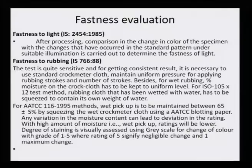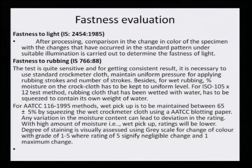Rubbing fastness is ascertained for both wet cloth and dry cloth, so values may vary. The percentage of moisture on the croc cloth has to be kept at a uniform level. Several test methods like AATCC methods are also known, but we follow the IS method. Wet pick-up is to be maintained at 65 ± 5 percent by squeezing the wet croc meter cloth using AATCC blotting paper. Any variation in moisture content can lead to deviation in the rating — with a high amount of moisture, wet pick-up ratings will be lower.